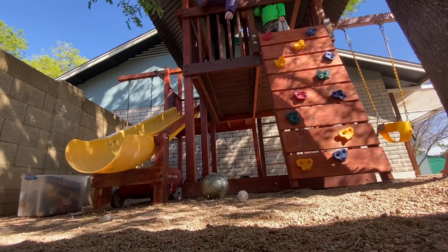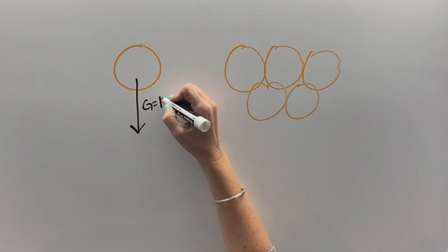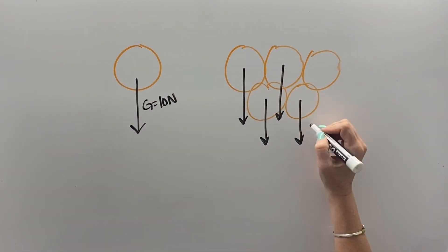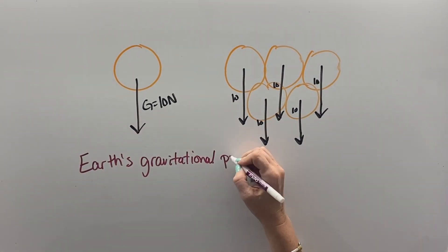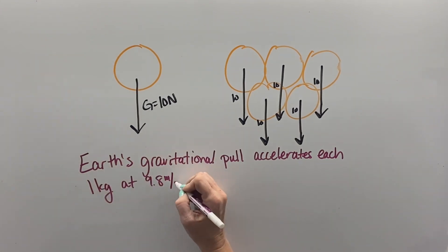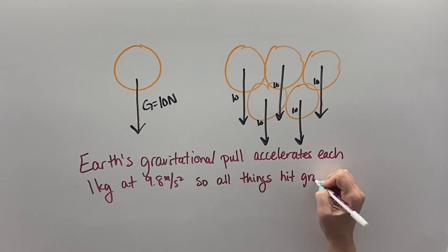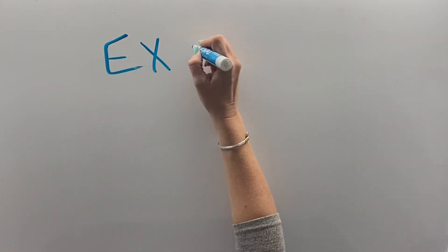And because of that, everything falls to Earth at the same rate, because every kilogram has the same amount of force being applied to it, and so the Earth's gravitational pull accelerates each kilogram at the same speed, so all things hit the ground at the same speed.